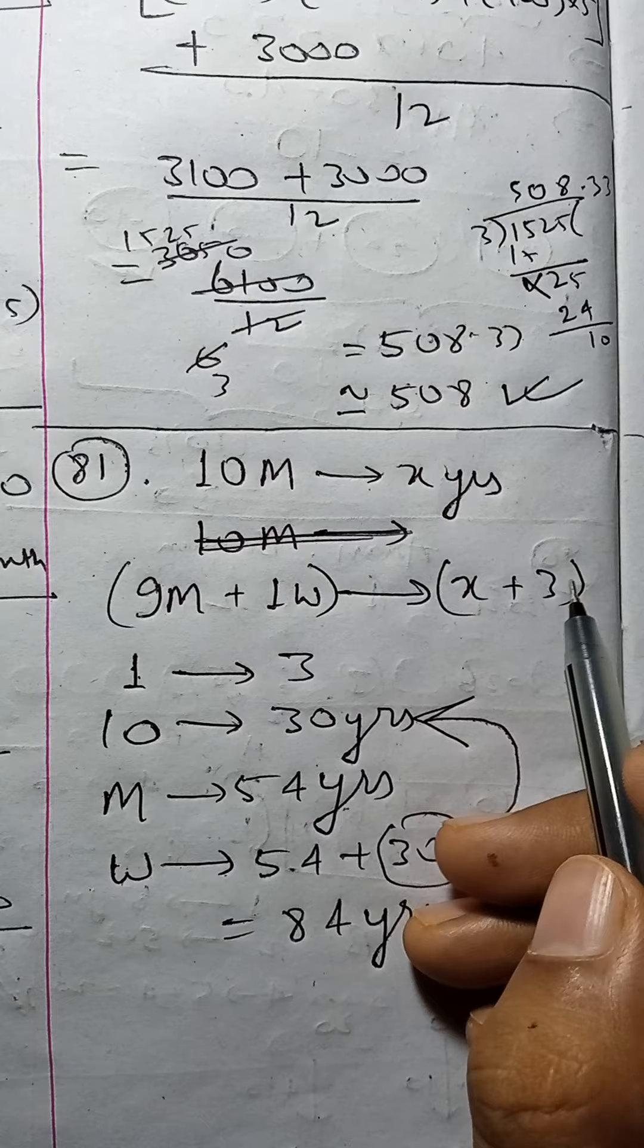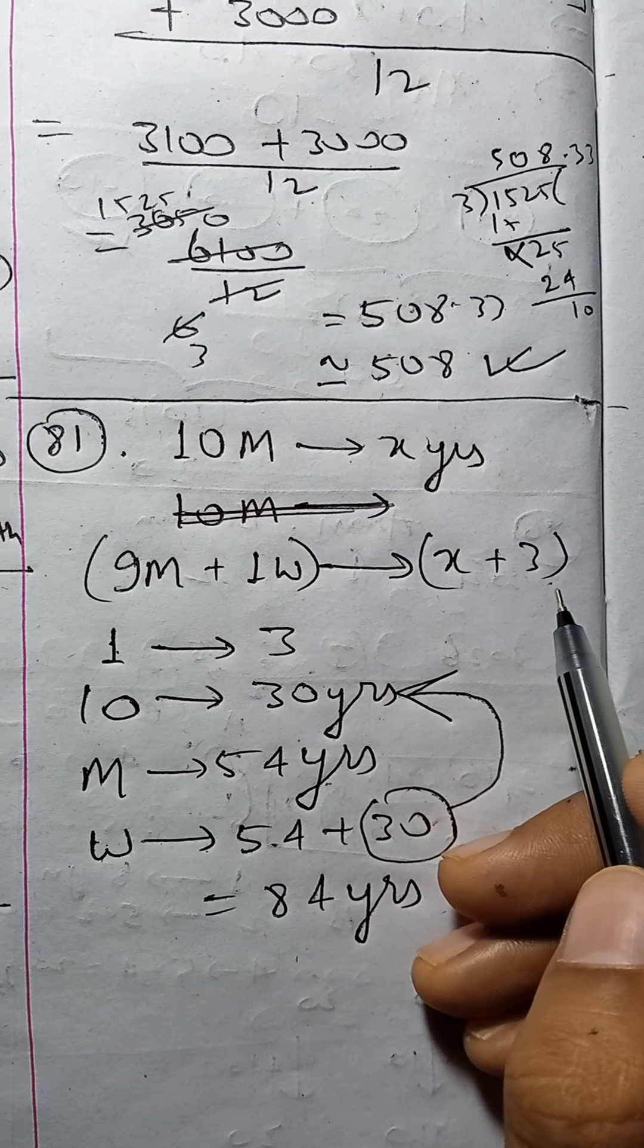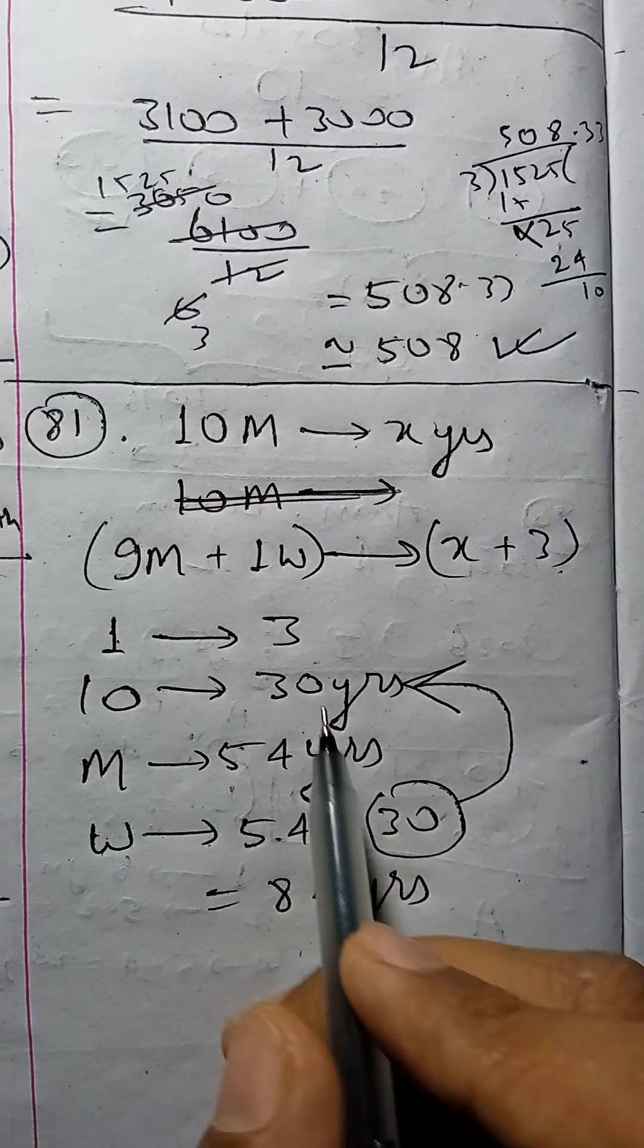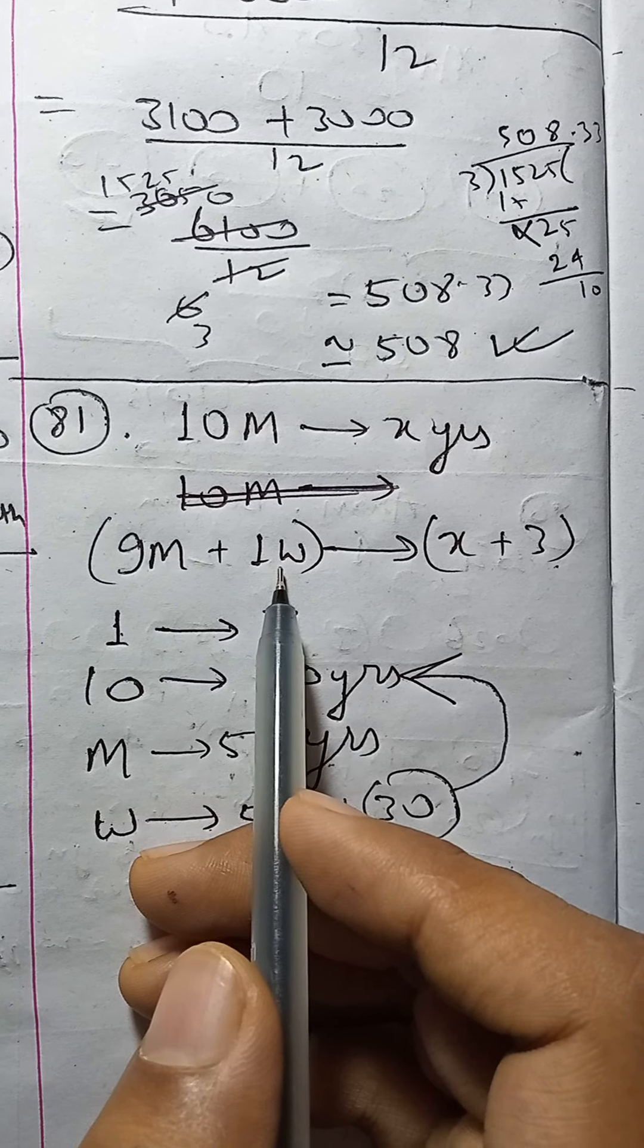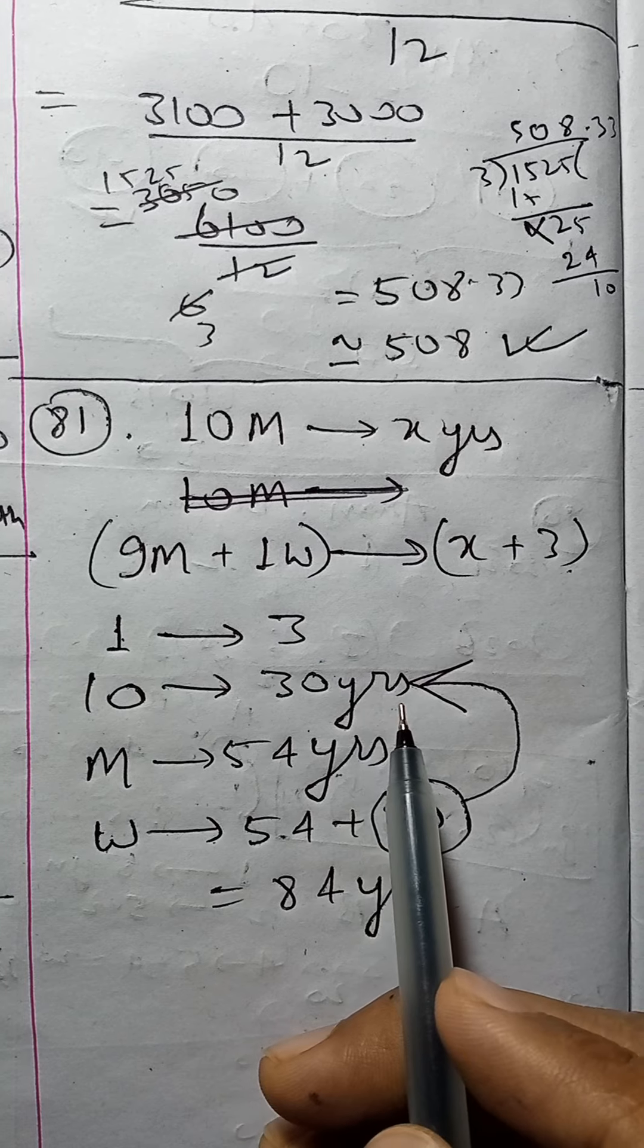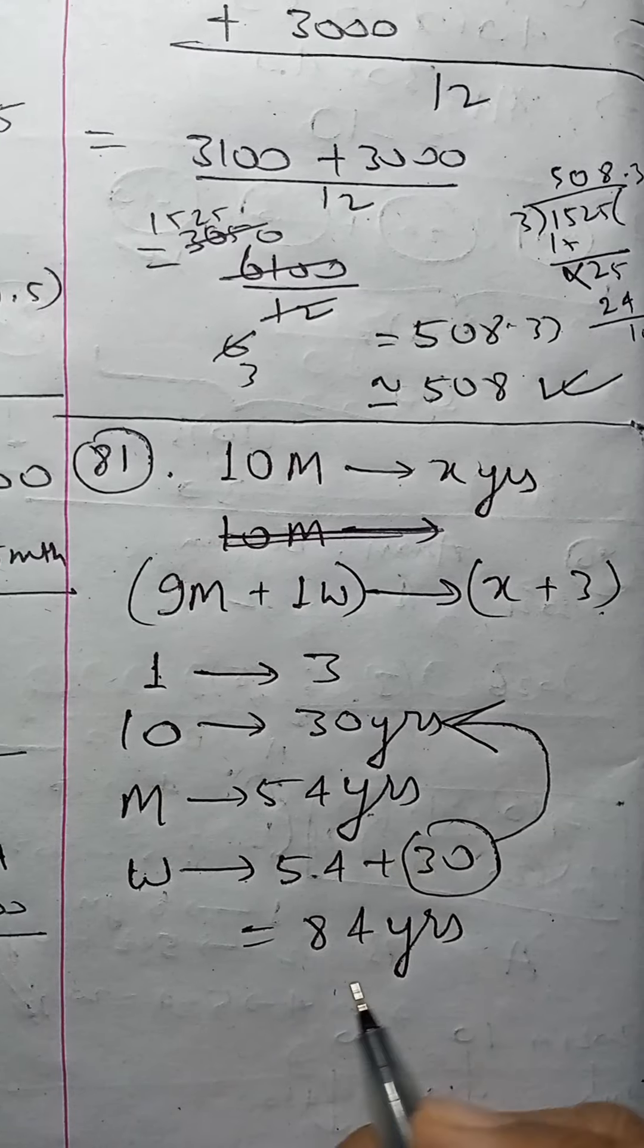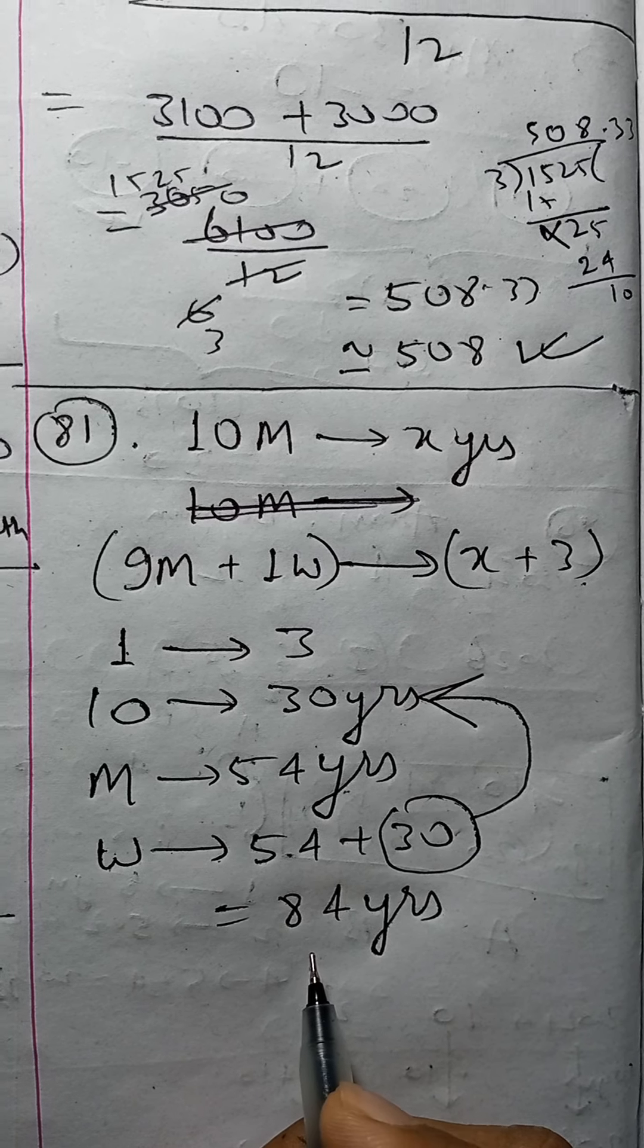When the woman's age is 84 years, then the average increases by 3 years per person, meaning 30 years total for 10 people. So the woman's age is 84 years. I hope you like this solution.